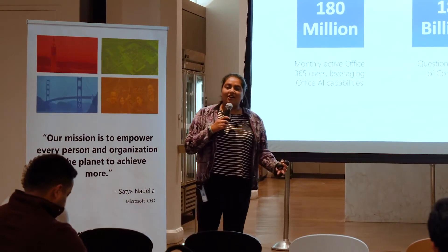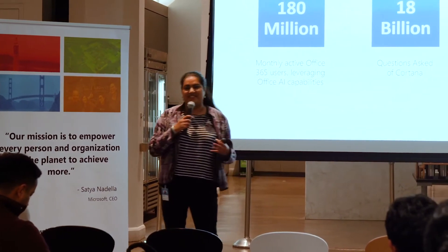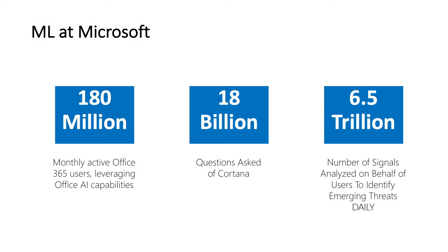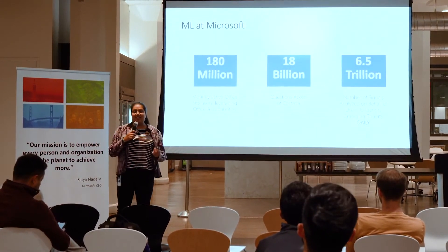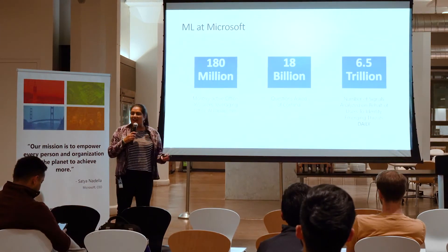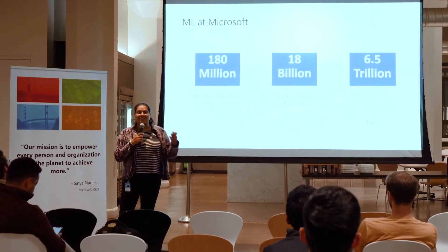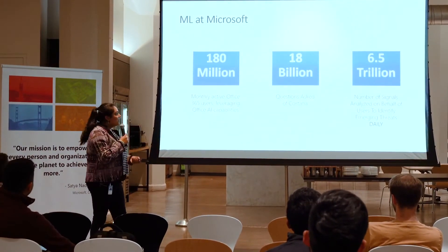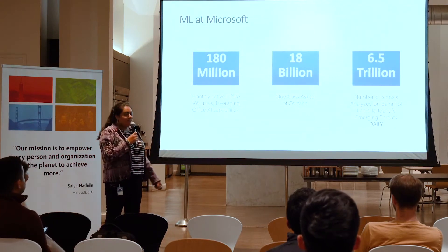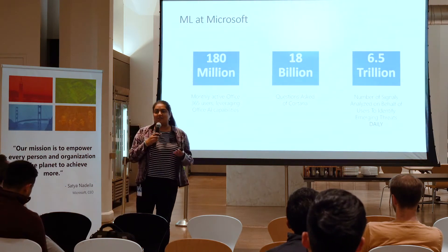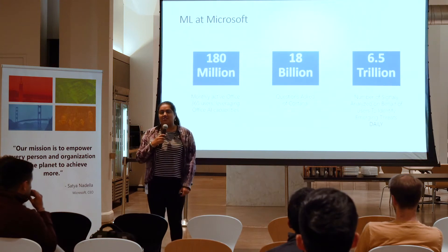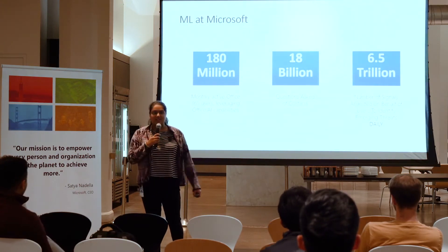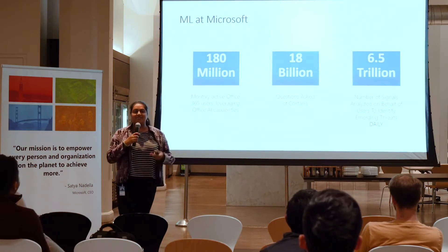To understand why we're even working on Onyx, we first want to start by understanding the scale of machine learning at Microsoft. It all starts with when we began integrating AI into our product suite. Right now at Microsoft, we have over 180 million monthly active Office 365 users. There have been 18 billion questions asked on Cortana, and over 6.5 trillion signals analyzed daily by Windows Defender feeding into machine learning models. So on the scale of millions, billions, and trillions, we have to find some way to do machine learning at scale.